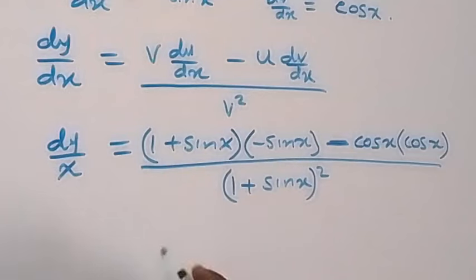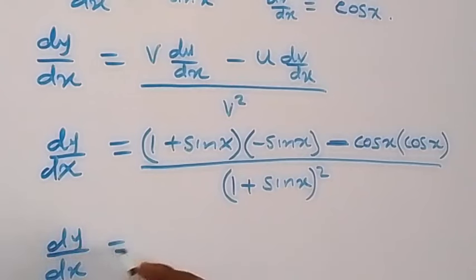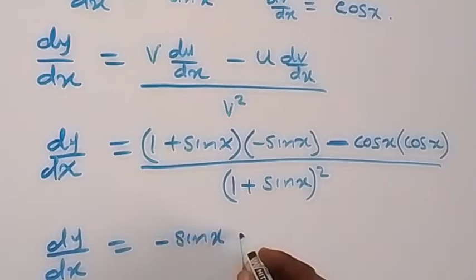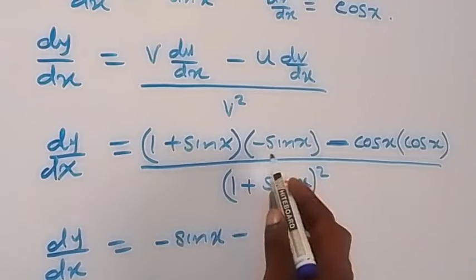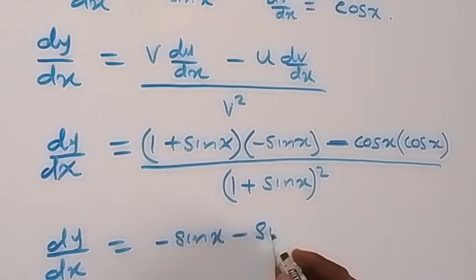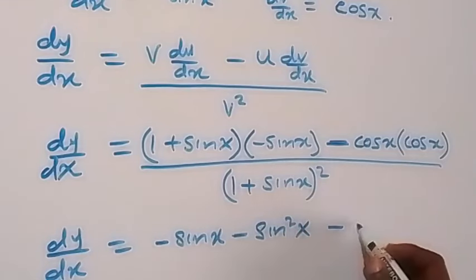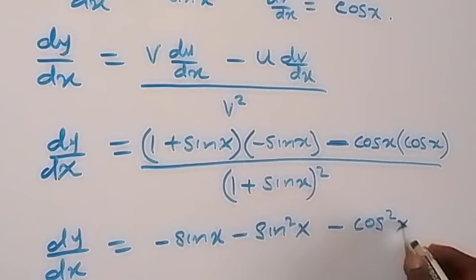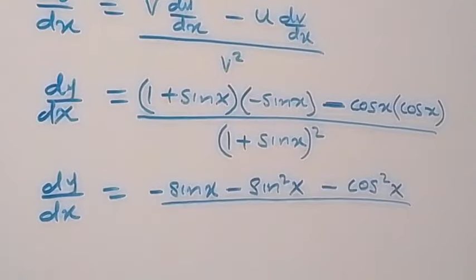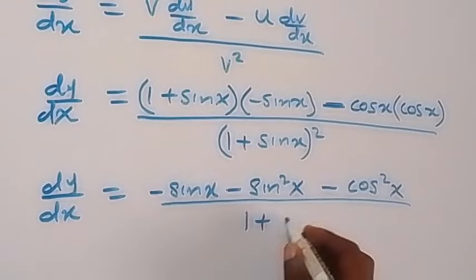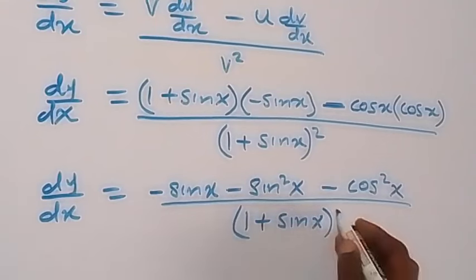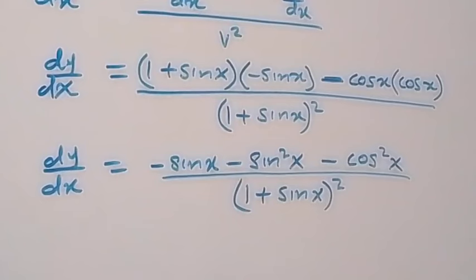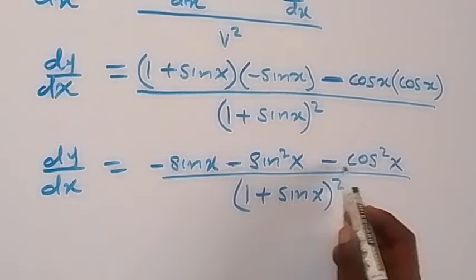When minus sin x opens this, dy/dx will give us minus sin x, then minus sin squared x, then minus cos squared x, divided by 1 plus sin x squared.